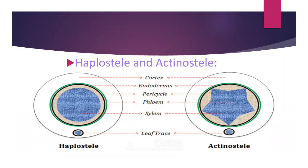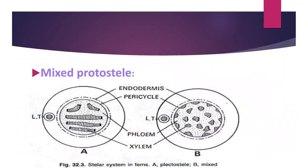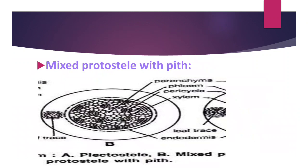You can see the diagram of haplostele and actinostele showing cortex, endodermis, pericycle, phloem, and xylem positions. Plectostele: in a plectostele, xylem is divided into a number of plates arranged parallel to each other, with phloem alternating with the xylem. You can see in the diagram how the plates are formed parallel to each other with phloem present between and around the plates. Mixed protostele: xylem and phloem are randomly arranged in mixed form. Mixed protostele with pith: pith is also present in the center of the mixed xylem and phloem structure.